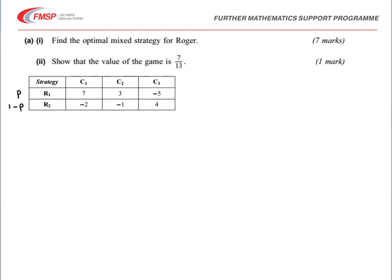And then look at the expected gains for the different things that Corrie can do. So if C plays C1, then the expected gain for Roger is given by substituting these numbers from the table, 7 and negative 2, multiplying that by the probabilities. So we have 7P and then minus 2 multiplied by 1 minus P. That gives you a value of 9P minus 2.